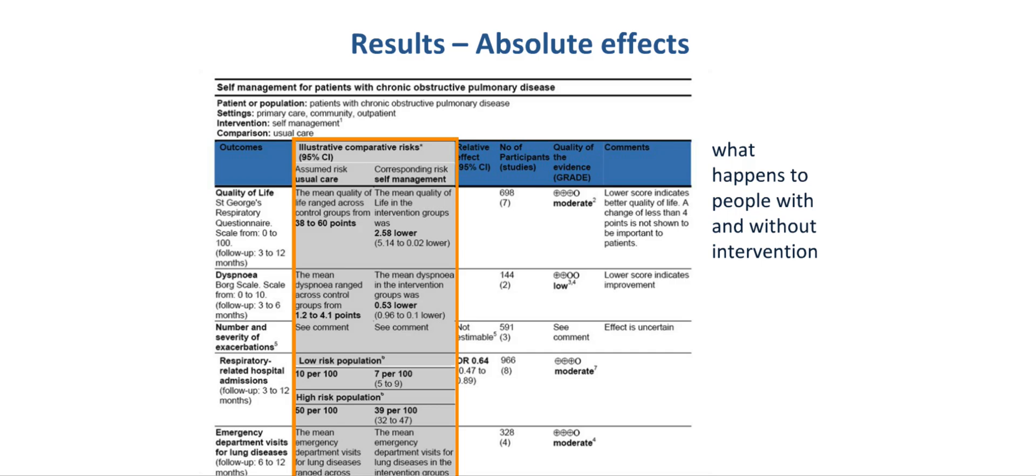For example, in the first row describing the outcome quality of life, in the usual care group, the mean quality of life ranged across the control groups from 38 to 60 points. This is on a scale from 0 to 100, where a scale point difference of four points is considered to be important to patients and higher scores are considered to be lower quality of life. The mean quality of life score in the intervention group was 2.58 points lower, or in other words, 2.58 points better. In parenthesis, you will find the confidence interval around the difference of 2.58 points.